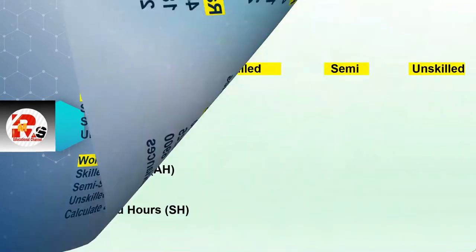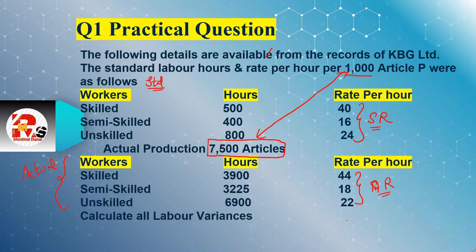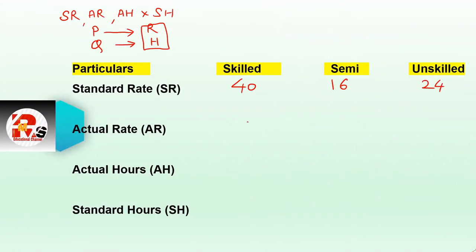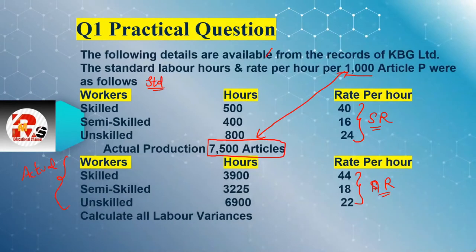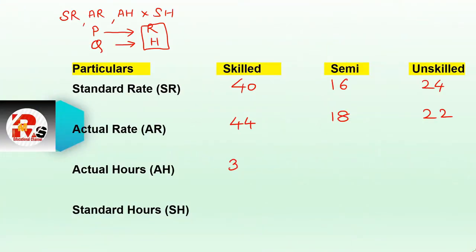Standard rates are 40, 16, and 24. Actual rates are 44, 18, and 22. Actual hours given are: skilled 3900, semi-skilled 325, unskilled 6900.